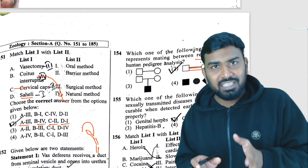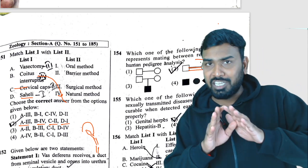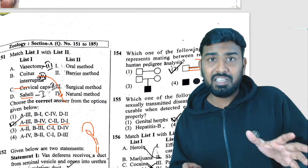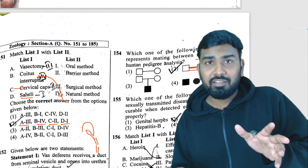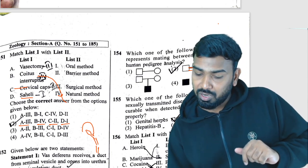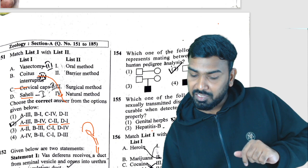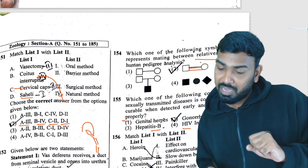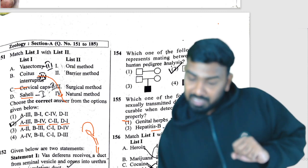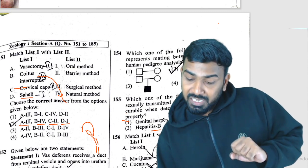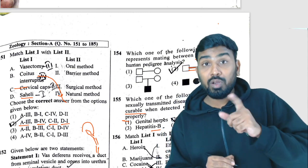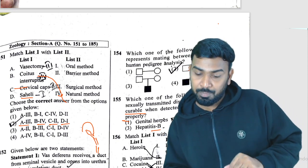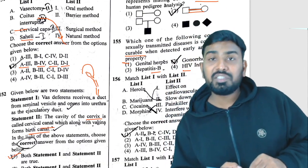Question 155: NCERT clearly states some diseases cannot be cured. HIV has no cure, hepatitis B has no cure, and genital herpes has no cure. But the question asks which disease is completely curable. So those three are not the answer — gonorrhea is the directly curable one.